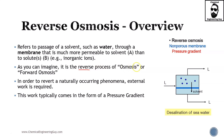In osmosis, the solvent typically moves towards the high concentration side. In reverse osmosis, the solvent moves from high concentration to low concentration. As you can imagine, to reverse entropy we need to apply external work — and actually a lot of it. This work typically comes in the form of a pressure gradient, meaning we are pressurizing the feed in order to push it through the membrane.